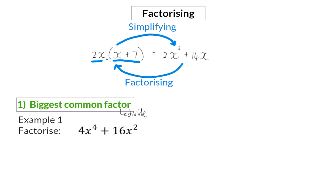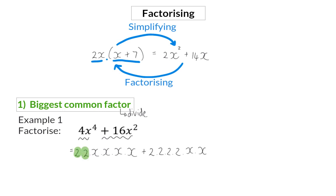Example 1. Factorize. Here we are given an expression that consists of two terms. We now need to determine the biggest common factor of these two terms. We're going to start off by breaking up these terms into their factors. So 4, broken up into prime factors, is 2 times 2, which we then multiply with x times x times x times x, or 4 x's. And then 16x squared is 2 times 2 times 2 times x times x. Now we have all the factors and we can identify the common factors. Both of these terms have 2 times 2, or 4, and both of them also have x times x as a factor.